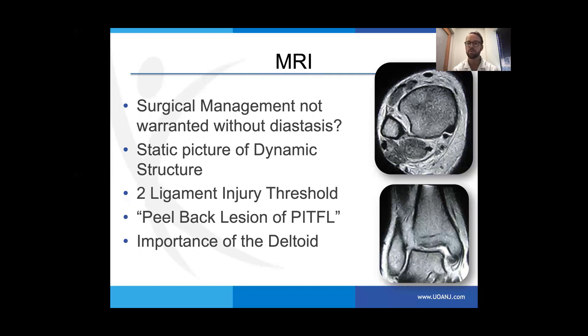Regarding additional imaging: we should have a very low threshold for ordering ancillary studies when clinical signs lead toward the syndesmosis. The issue with MRI is whether we should be managing these patients surgically without a diastasis. Any static study is a snapshot of a dynamic structure. What we're looking for is a two-ligament injury threshold, because that's typically the point at which the syndesmosis becomes unstable and generally requires surgical intervention. You'll often see peel-back lesions of the posterior inferior tib-fib ligament — avulsive injuries that may involve cortical involvement.